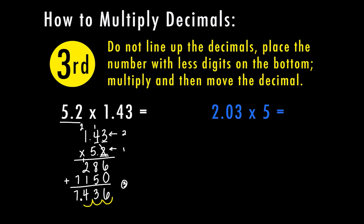For example 2, again I don't have to worry about lining up my decimals. I want to put the number with fewer digits on the bottom. So in this case, even though 5 is greater than 2, I'm still going to put 2 and 3 hundredths on top and 5 on the bottom. The reason being: if I put 2 and 3 hundredths on the bottom, I'd end up with at least 2 rows to add up later. This way I just have 1 digit to multiply by. 5 times 3 is 15. 5 times 0 is 0, plus 1 is 1. 2 times 5 is 10.